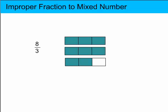So in order to convert this to a mixed number, you can see that there are 2 whole parts and 2 thirds of a fractional part. So our mixed number will be 2 and 2 thirds. So that is equivalent to the improper fraction 8 thirds.